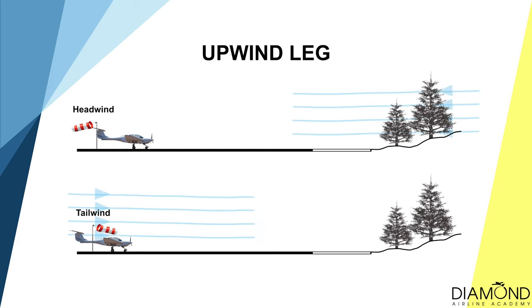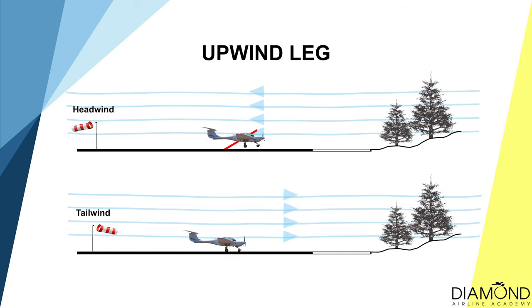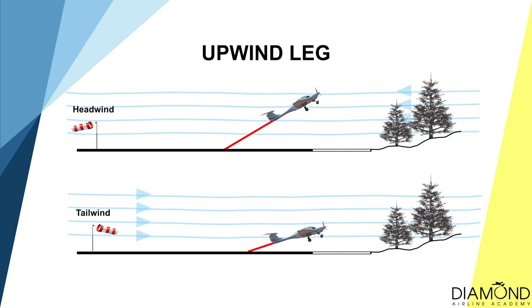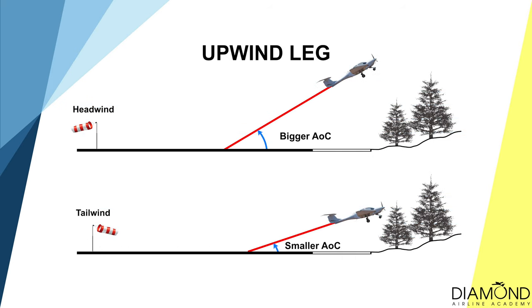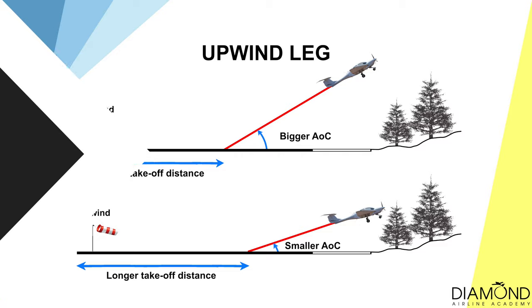You may wonder how a pilot determines which way to take off and land. The answer is wind direction. An aircraft will always take off into wind, because the angle of climb will be increased while the take-off distance will be decreased, which increases the safety aspect of the operation.